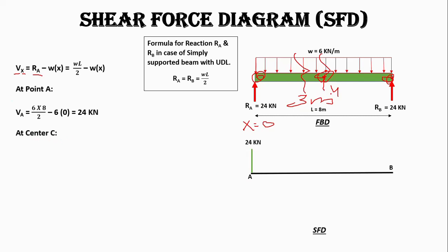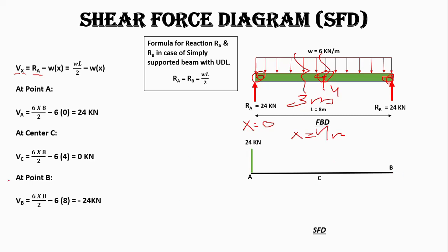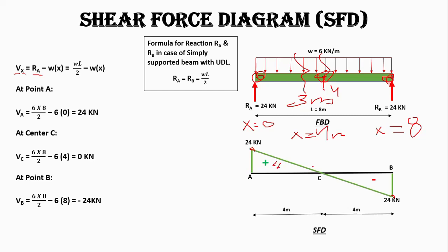We draw a line of 24 kilonewtons at point A. At the center of the beam, x equals 4 meters from A, and the shear equals 0. At point B, x equals 8 meters, and the shear equals minus 24 kilonewtons, which is why we draw 24 kilonewtons in the downward direction. Joining these points gives the shear force diagram, where the upper part is positive shear and the lower part is negative shear.